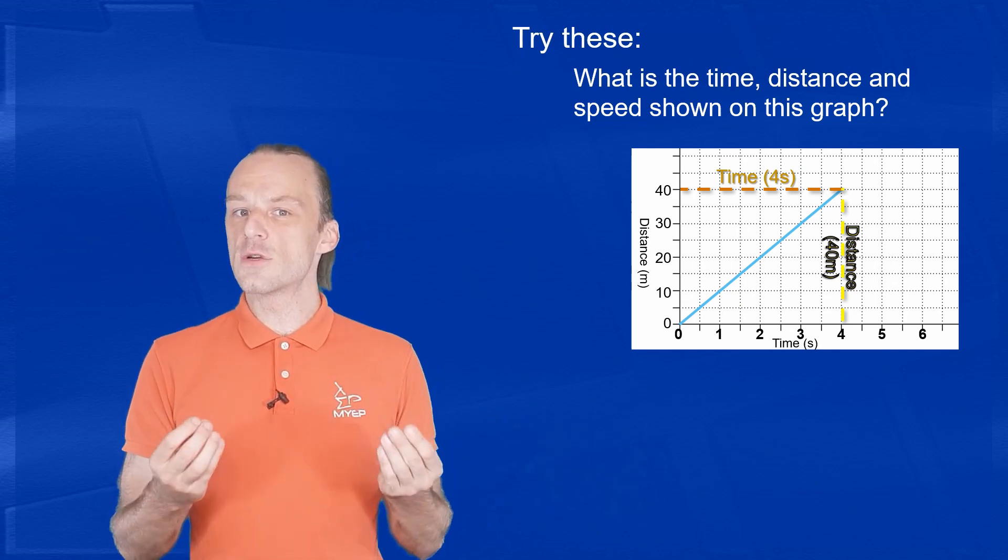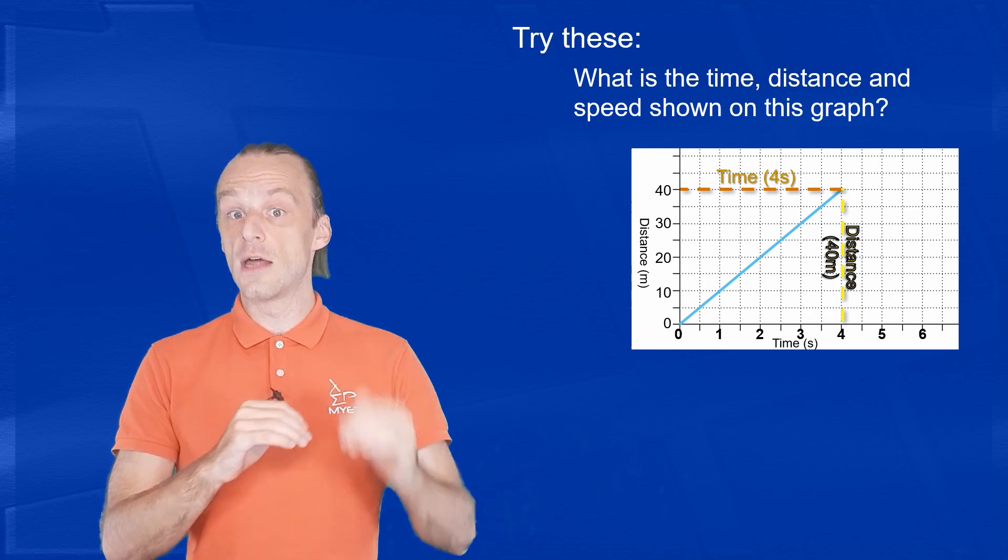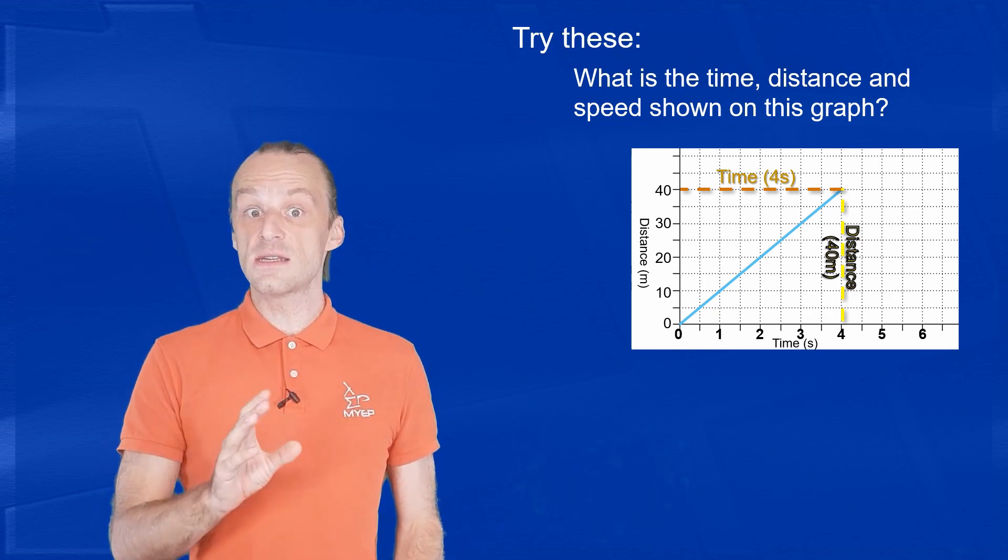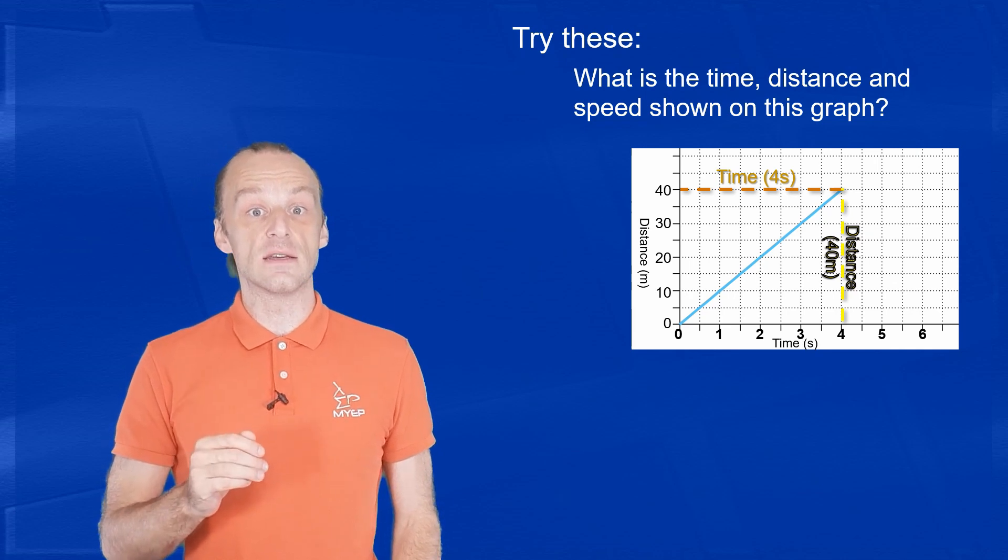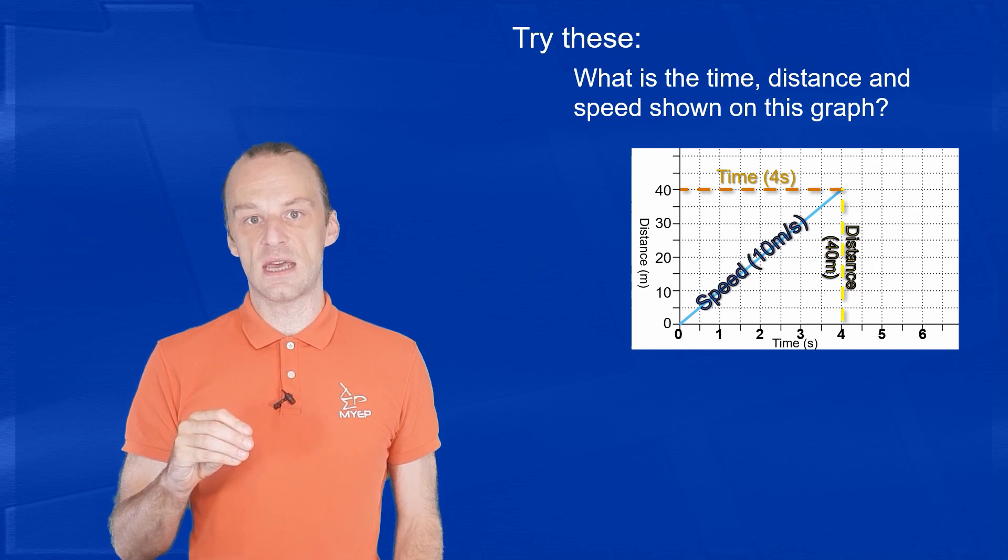We take that 40 meters rise and divide it by the 4 seconds, that's rise over run, and that gives us the gradient of the graph, which is the speed. So the speed is 40 divided by 4, or 10 meters per second.